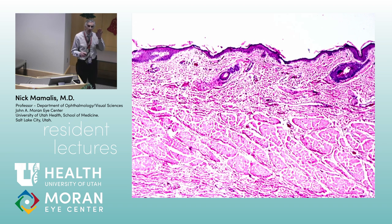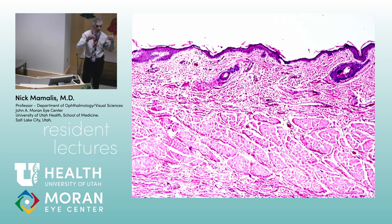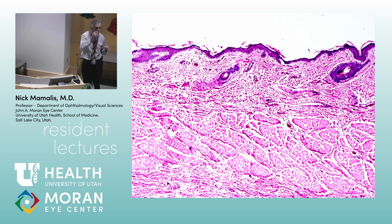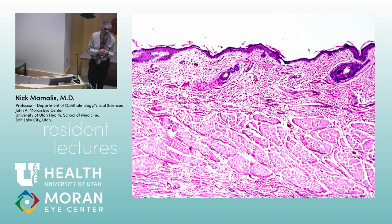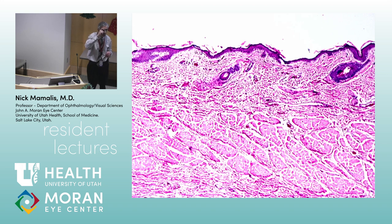You want to keep straight the difference between what the orbicularis does and what the levator does. The levator comes out superficially and inserts into the tarsus, helping to lift the lid. The orbicularis sits underneath the skin but in front of the tarsus. The orbicularis runs circumferentially. The orbicularis has three parts: the orbital, pretarsal, and preseptal — the part that's a little further peripherally in front of the septum.